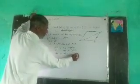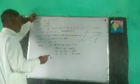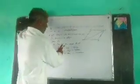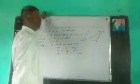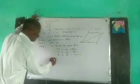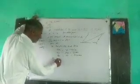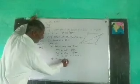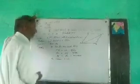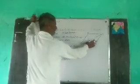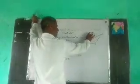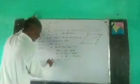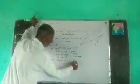AC is common. So three sides of one triangle are equal to three sides of the other triangle. Therefore, by the SSS (Side-Side-Side) congruence rule, triangles ABC and ACD are congruent.